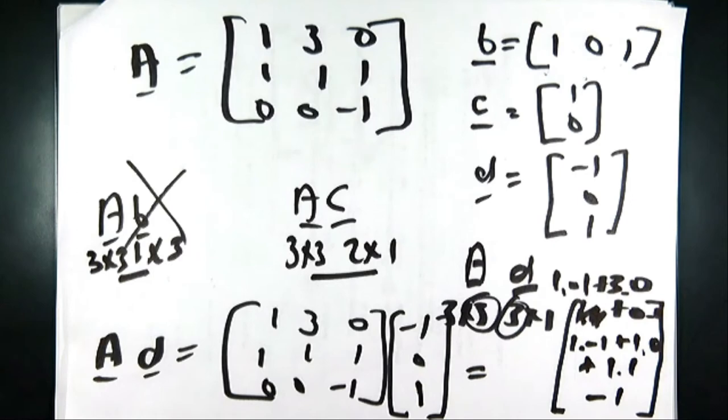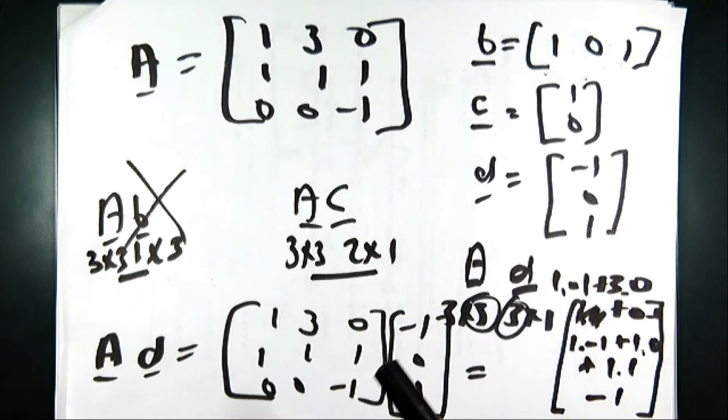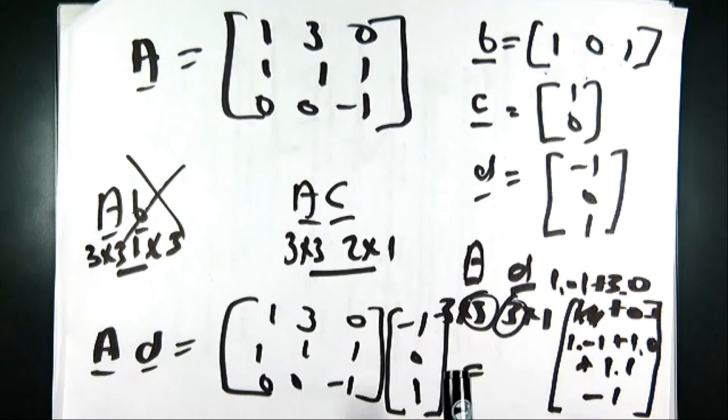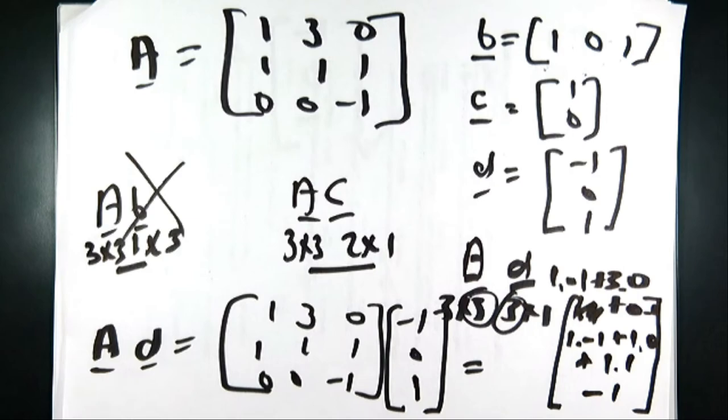That matrix multiplication — a square matrix by a column vector of the same dimension — is very, very important because this is typically what you see in engineering analysis. This is a 3×3 multiplied by a 3×1, and that's a very common multiplication. You'll probably see some of that in the exam.